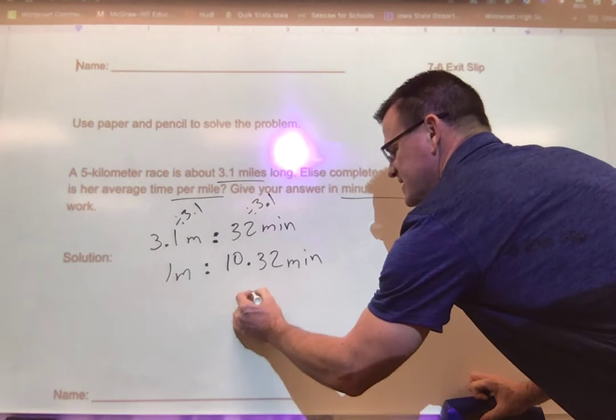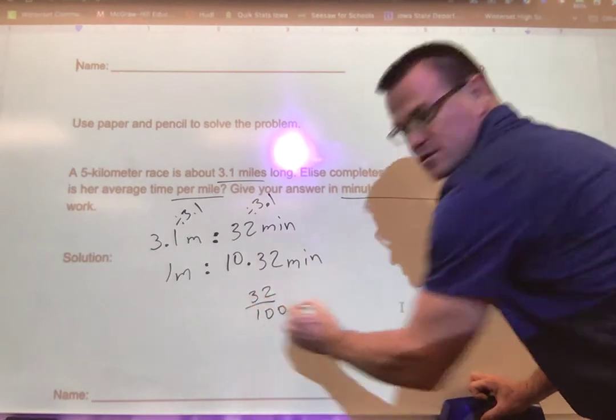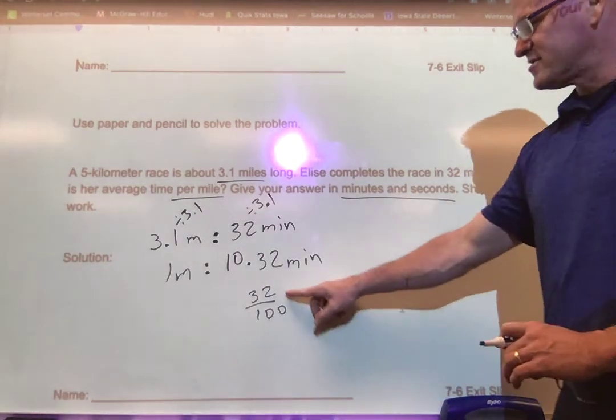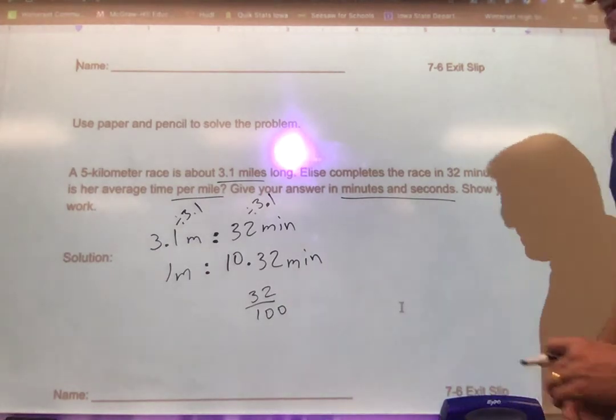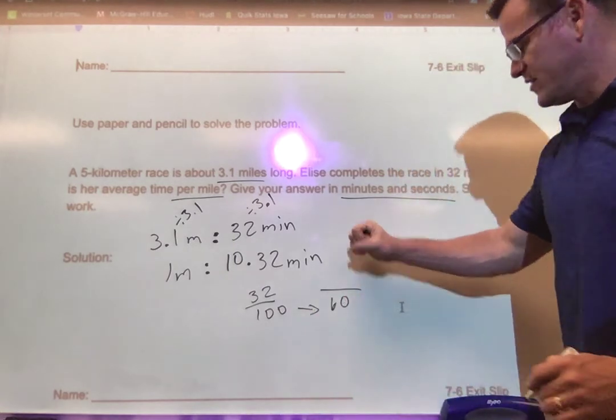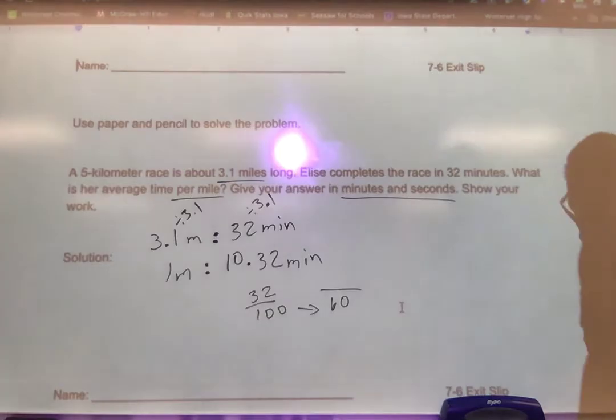This is 32 hundredths. If we say that's 10 and 32 hundredths minutes, so if I'm looking at this as a fraction, that's 32 hundredths. That's not seconds. Seconds are based in out of 60, we have 60 seconds, so I need to get this 32 hundredths somehow to 60 seconds. So I've got to get this denominator to a 60.